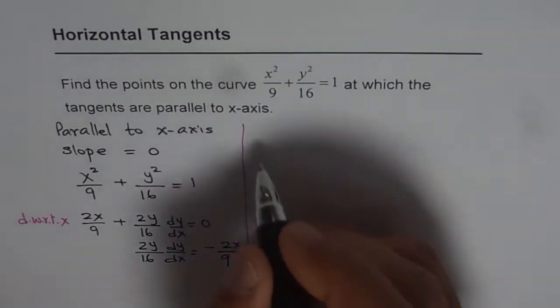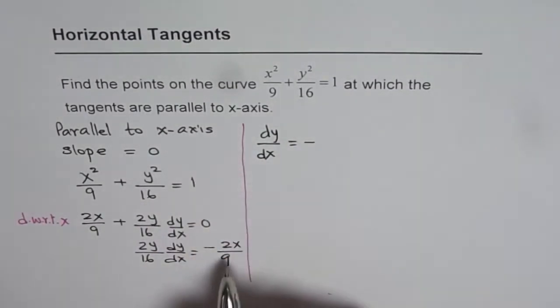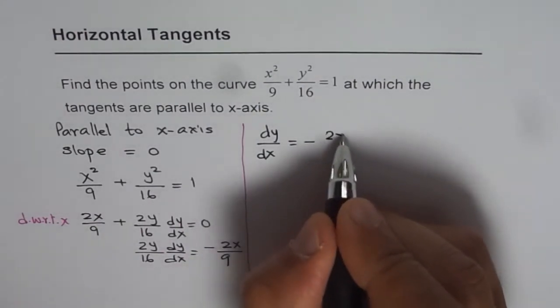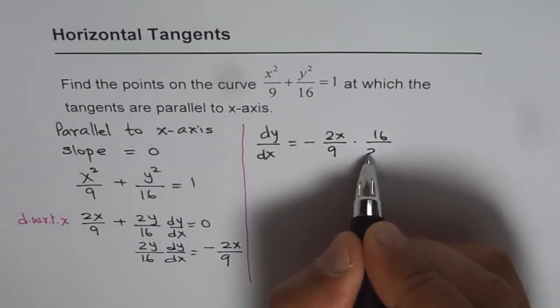So from here we get dy/dx = -2x/9 × 16/2y.